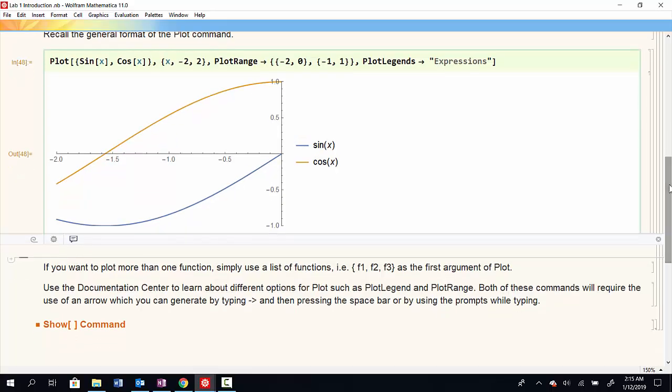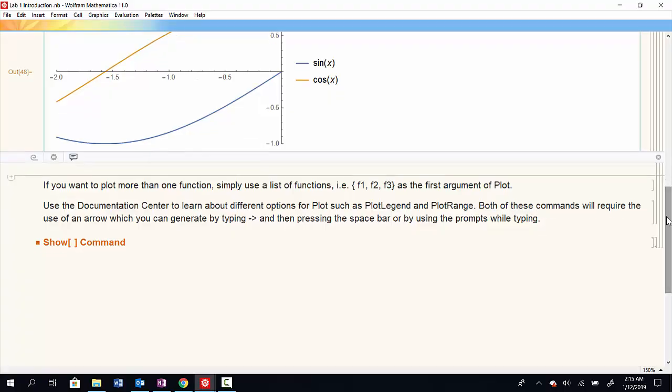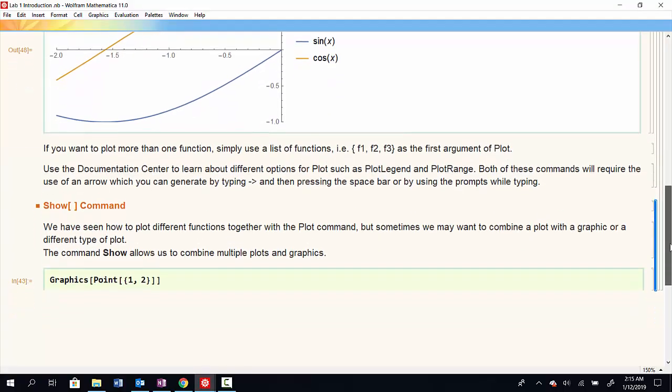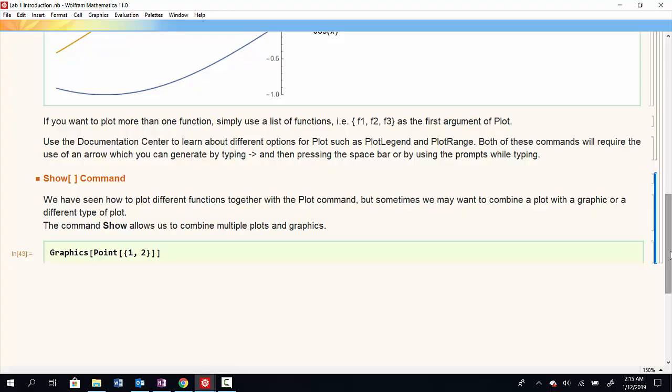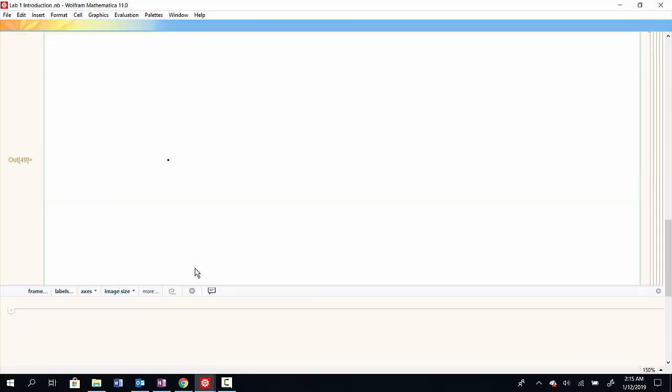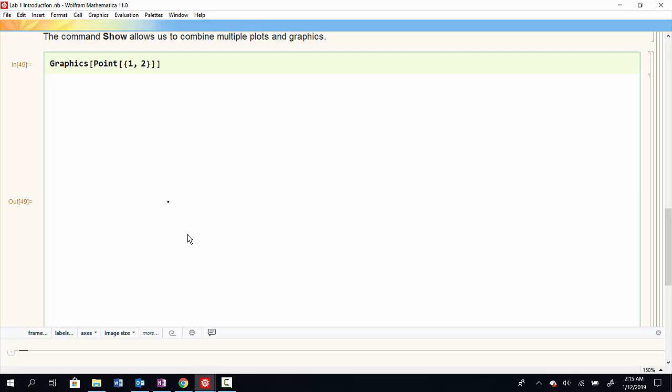Alright, what if we want to plot not just two functions together, but two different objects together? So maybe take a plot of sine and then add some sort of point value to it or some arrow or some other graphic icon. Well, then I have to use the show command because the plot command is strictly for plotting functions. So here I have a graphics command and this graphics will generate a picture of a point. So now I have a point plotted at 1, 2.